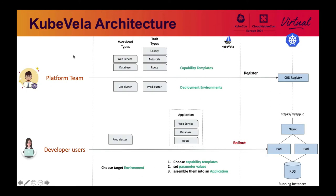Here's an architecture diagram of how to deliver applications on KubeVela. First, the platform teams need to set up deployment environments and capability templates. The capabilities are defined as workload or trait definitions, which include templates to expose high-level APIs. These definitions are all registered in Kubernetes as CRDs. When developer users want to deploy their apps, they choose the target environments, pick the high-level template APIs, compose application objects, and finally roll out the application objects to live clusters.